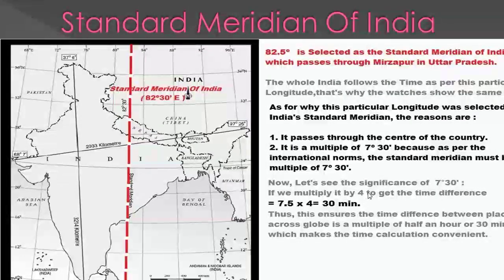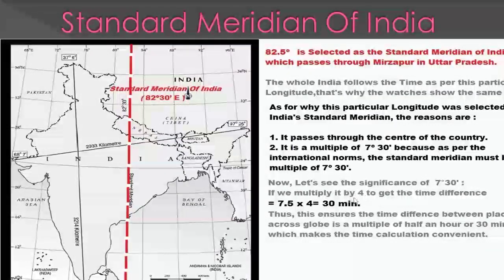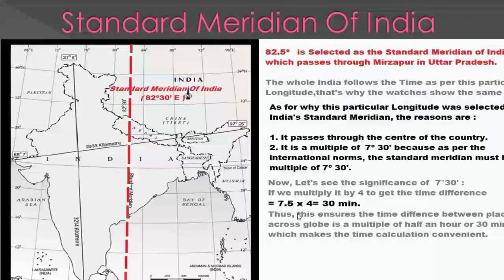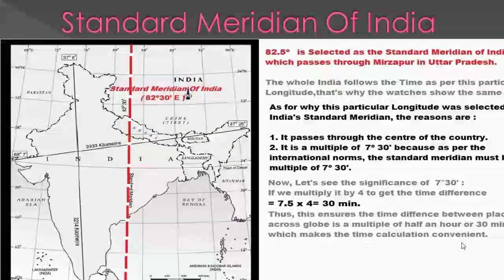Let us see the significance of 7.5 degrees. If we multiply 7.5 degrees by 4, we get the time difference, which comes to half an hour — 30 minutes. This ensures that the time difference between places across the globe is a multiple of half an hour or 30 minutes, which makes time calculation convenient.